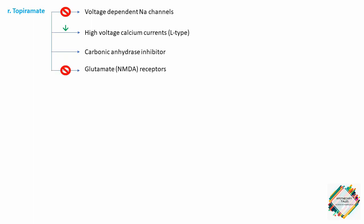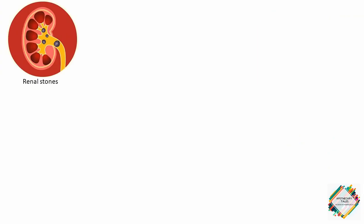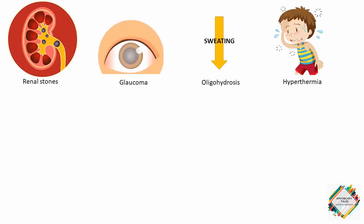Next is topiramate. Topiramate has multiple mechanisms of action. It blocks voltage-dependent sodium channels, it reduces high-voltage calcium currents that is of L-type, it is a carbonic anhydrase inhibitor, and may act at glutamate NMDA sites. Topiramate is effective for use in partial and primary generalized seizures. It is also approved for prevention of migraine. It inhibits cytochrome P2C19 and is induced by phenytoin and carbamazepine. Adverse effects include somnolence, weight loss, and paresthesias, as well as renal stones, glaucoma, oligohydrosis, and hyperthermia.